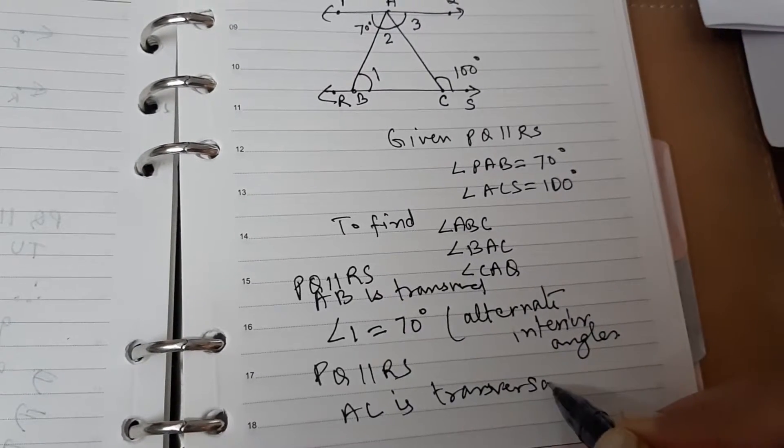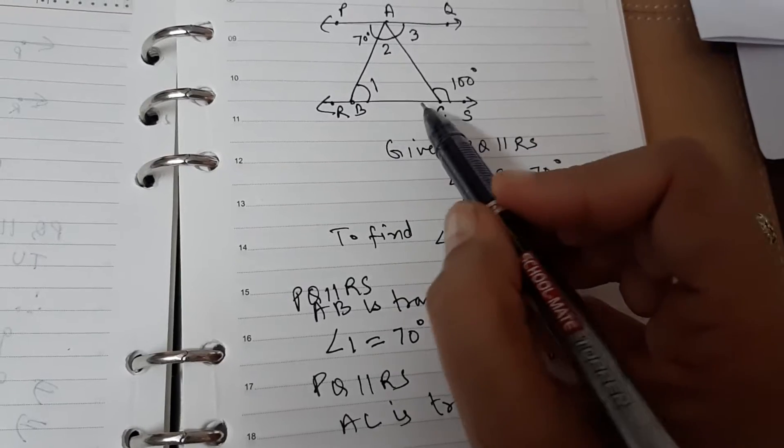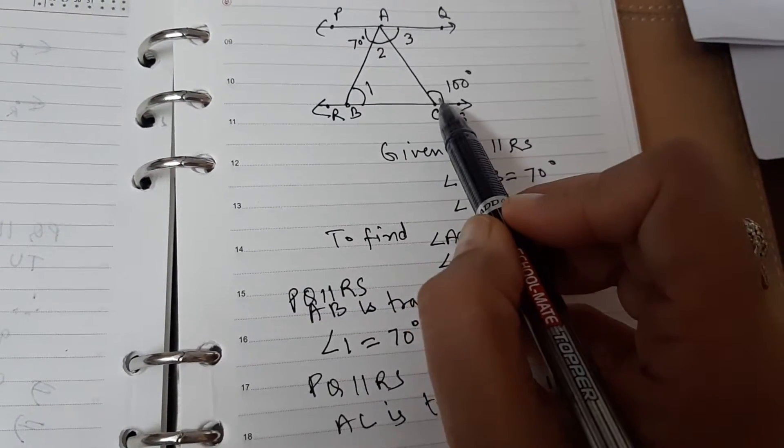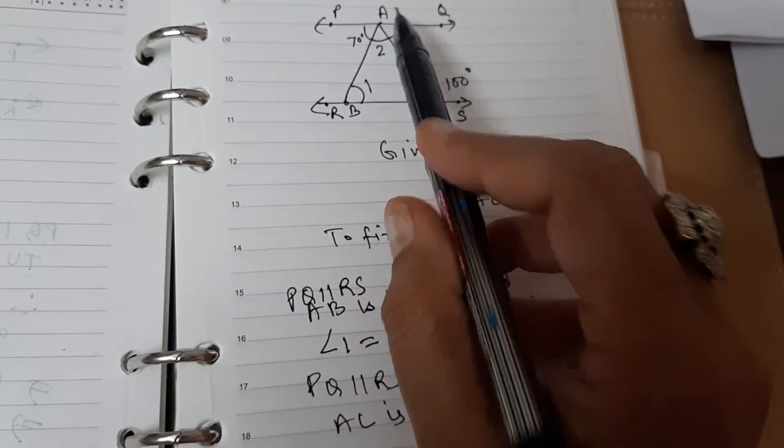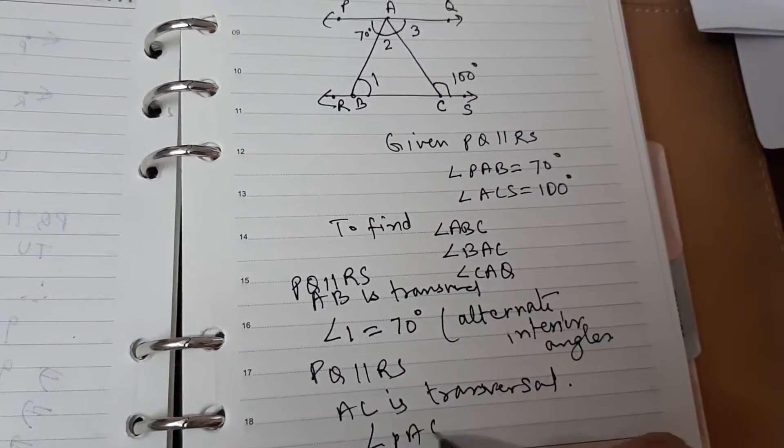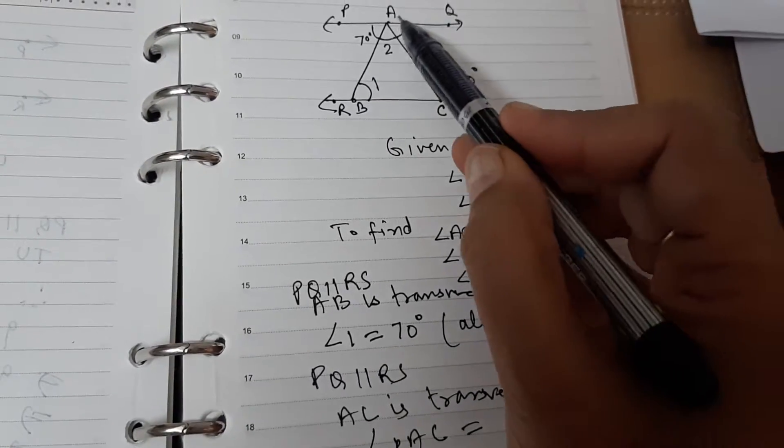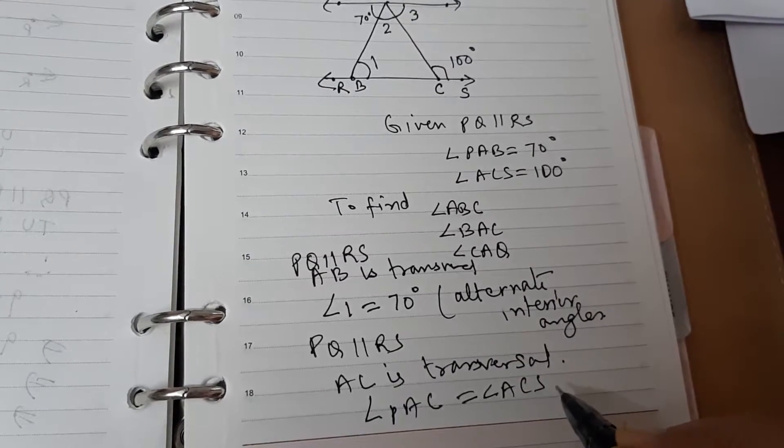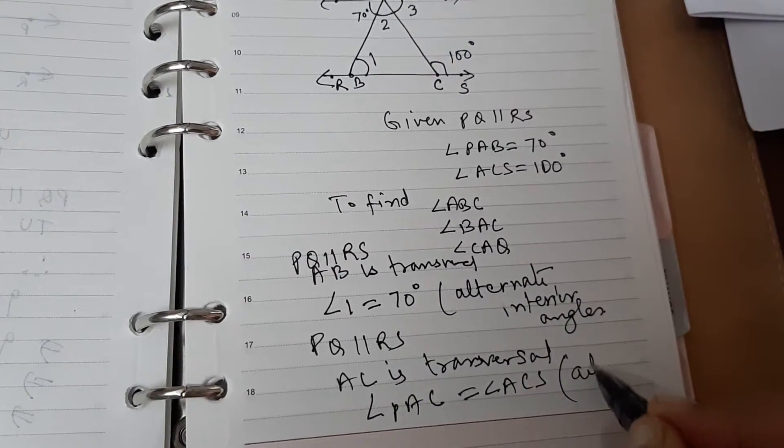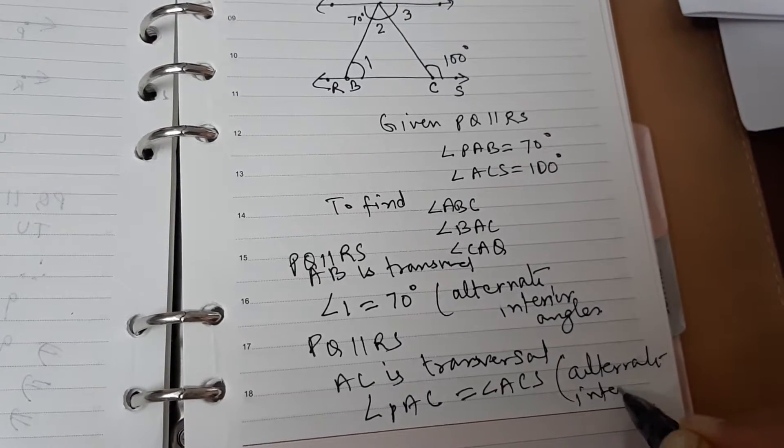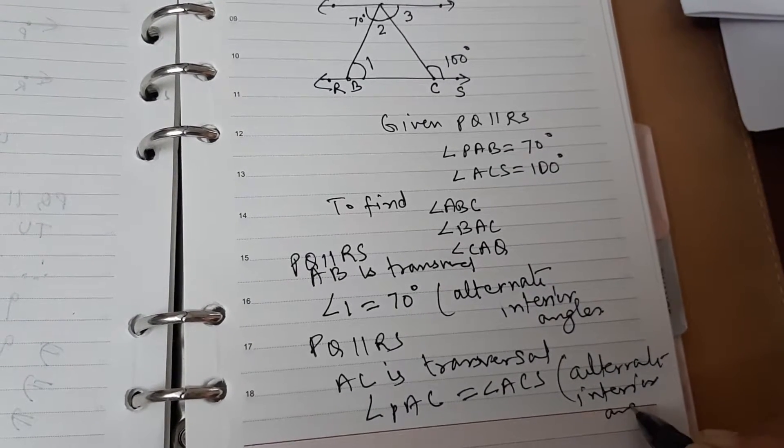Now, observe the pair of alternate interior angles. Angle PAC will be equal to angle ACS. This is again a pair of alternate interior angles.